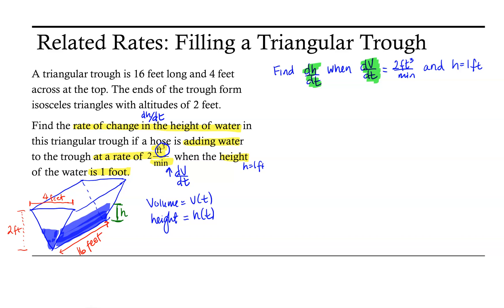This trough is a triangular prism. The volume of this shape is the area of the triangular sides times the length of the trough. We know the length of the trough is constant at 16 feet and does not change with time, so this gives us area times 16 feet. Now we need to find the area of the triangular cross section.